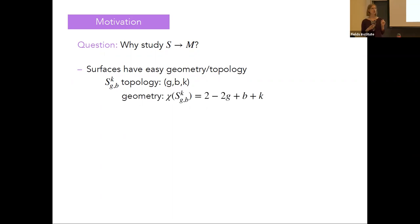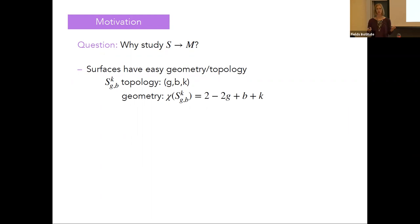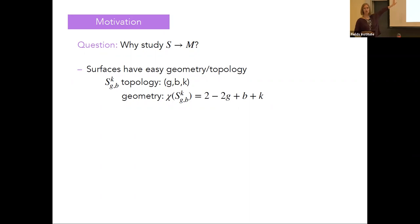Moreover, the geometry of the surface is completely determined by its topology. The Euler characteristic completely determines whether the surface admits spherical geometry, flat geometry, or hyperbolic geometry — based on whether this number is greater than zero for spherical geometry, zero for flat geometry, or negative for hyperbolic geometry. This is really all of surface topology.